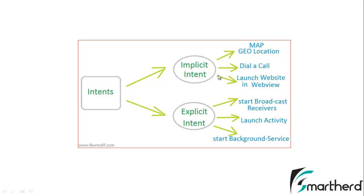If the user clicks a button in your application, you can make the user open a Google Chrome browser or any other browser to view a website, or the user can directly call any contact through your application, or he can navigate directly from your application to Google Maps to check out the location of a particular coordinate.